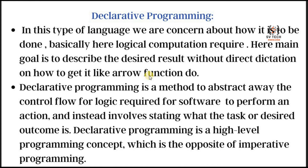Declarative programming — in this type of language, we are concerned about what it is to be done. Basically, logical completion is required. The main goal is to describe the desired result without direct instruction on how to get it, like using arrow functions. Declarative programming is a method to abstract away the control flow logic required for software to perform an action, and instead involves stating what the task or desired outcome is. It is a high-level programming concept, which is the opposite to imperative programming.